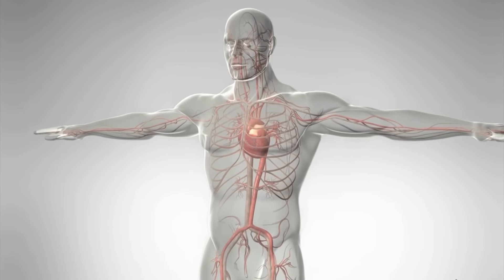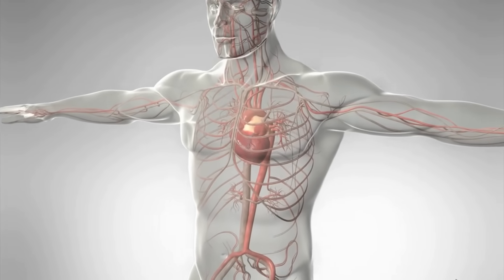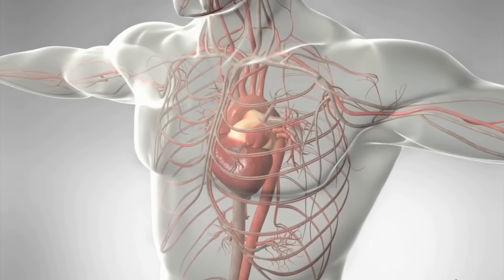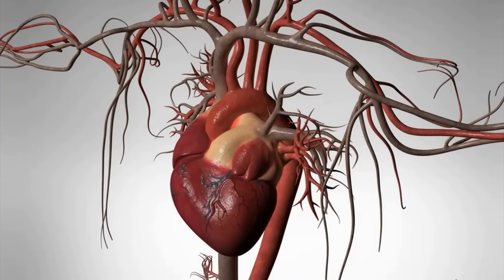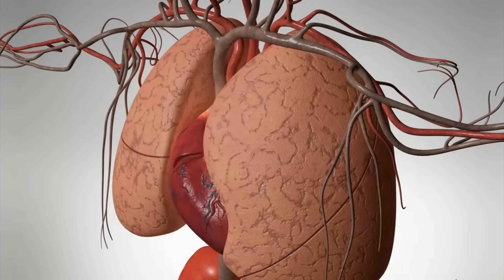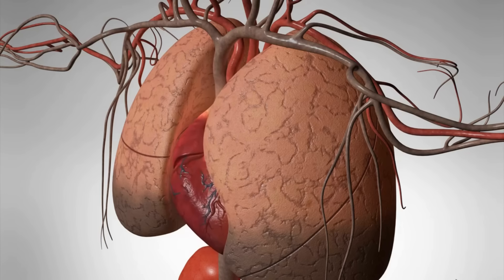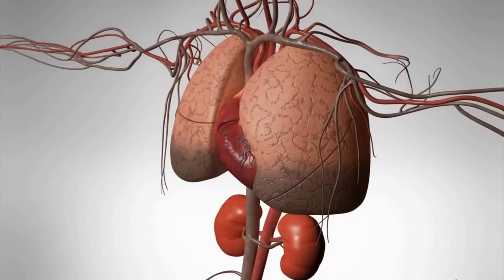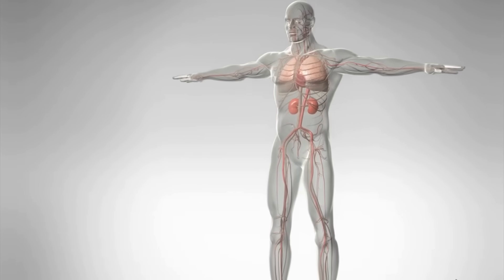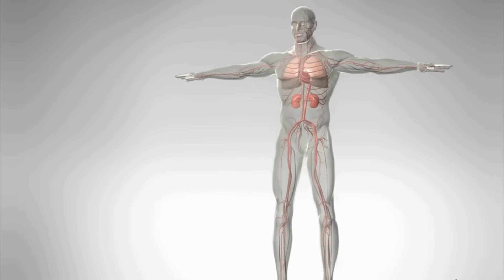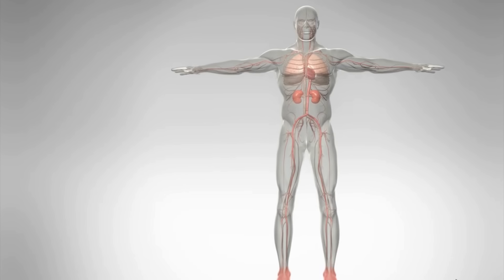Heart failure occurs when either the left or right side of the heart doesn't work properly. When the left side isn't working like it should, blood gets backed up in the lungs, making you short of breath. Also, not enough oxygen-rich blood is getting to the body, which causes fatigue. Because the kidneys are getting too little blood, they don't make enough urine, so fluid builds up in the body. This can cause swelling of the tissues, most easily recognized in the lower legs and feet.